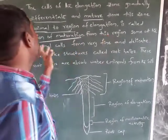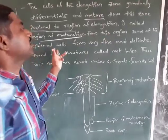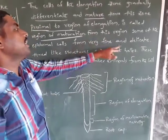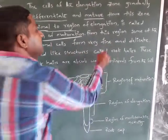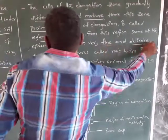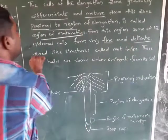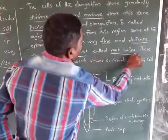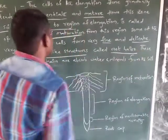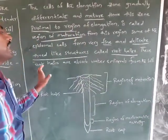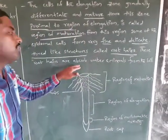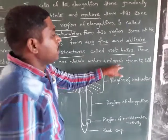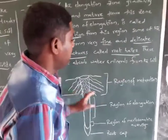In the region of maturation, some of the epidermal cells form very fine and delicate thread-like structures called root hairs. These root hairs absorb water and minerals from the soil.